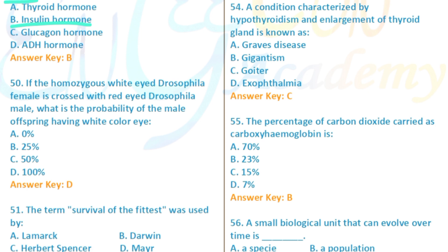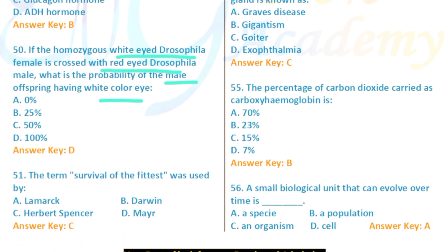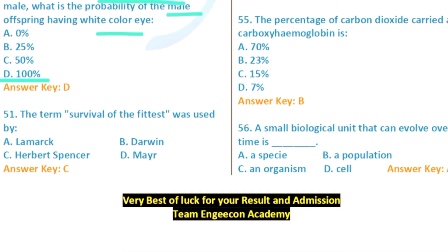Question 50: If a homozygous white-eyed Drosophila female is crossed with a red-eyed Drosophila male, what is the possibility of male offspring having white eyes? In this cross, all males will receive the white-eye X chromosome — the chances of white-eyed males are 100%.